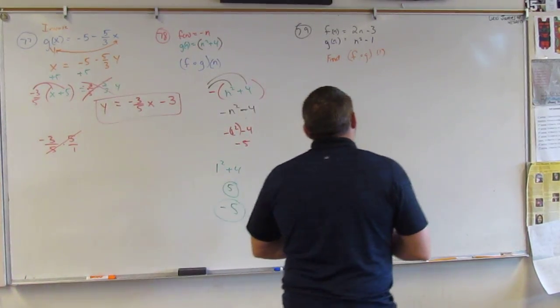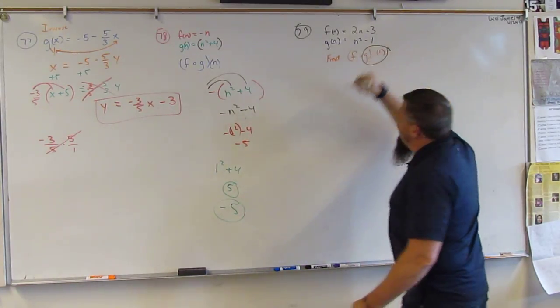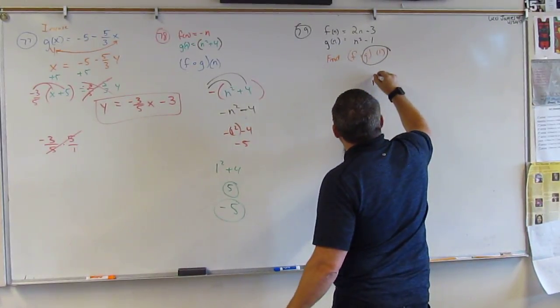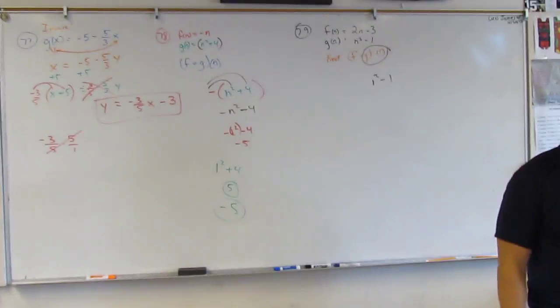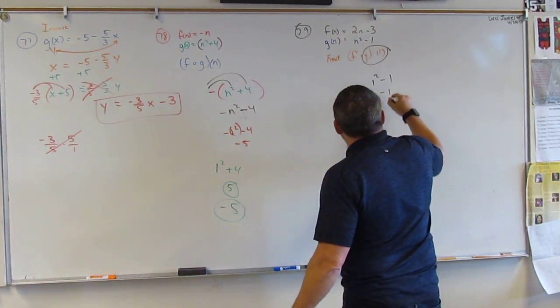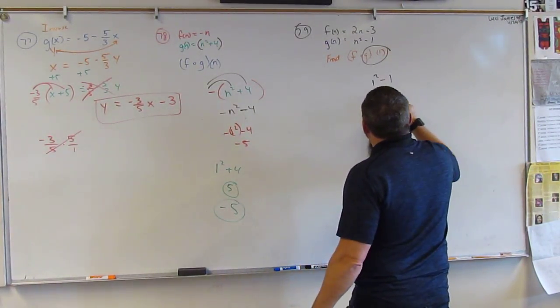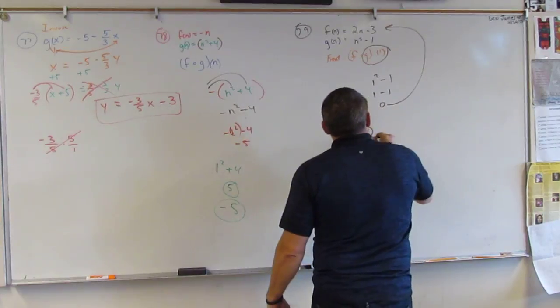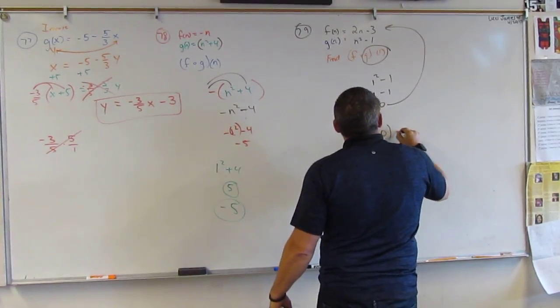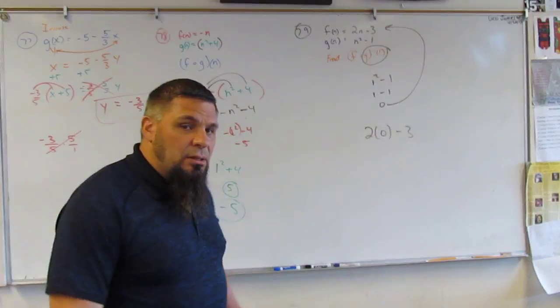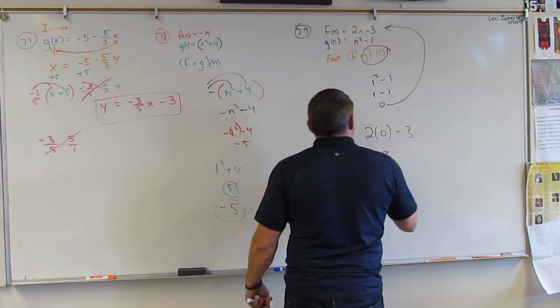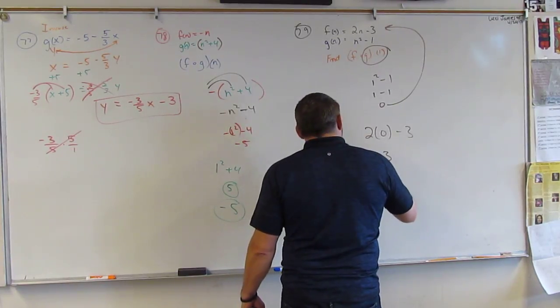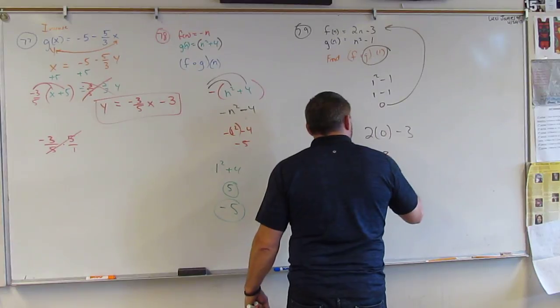So, let me show you what I mean by that. I'm going to take this and I'm going to plug it into F or into G. So, let's plug in 1 into G. What's 1 squared minus 1? What's 1 squared? 1. What's 1 minus 1? 0. Okay. Now, we're going to take 0. We're going to plug it into F. So, what is 2 times 0 minus 3? Negative 3. Okay. So, what that means is F of G of 1 is equal to negative 3.